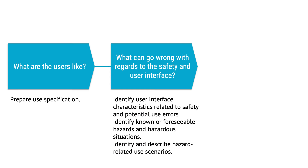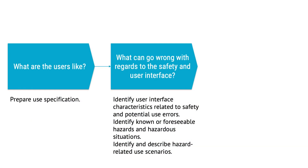After you've figured out what your users are like, you start to analyze what could go wrong with regards to safety and the user interface of the device. In the standard, because safety is the primary goal of usability engineering, analyzing potential safety risks makes a total of three steps. In general, analyzing the risks is similar to identifying hazards and answering questions relating to safety — similar to what many would do as part of a risk management process according to the ISO 14971 standard. However, for the usability engineering process, those steps are restricted to the safety of the user interface.